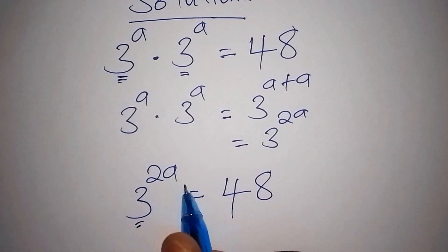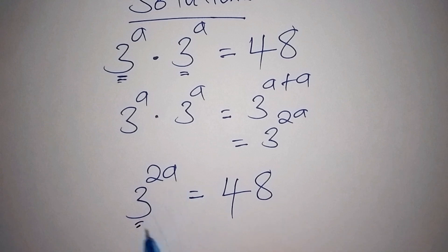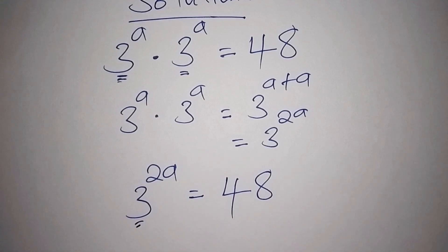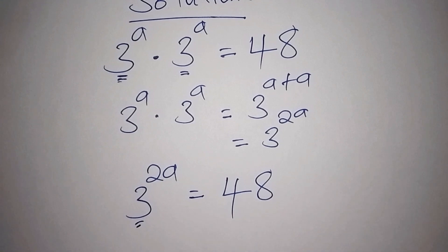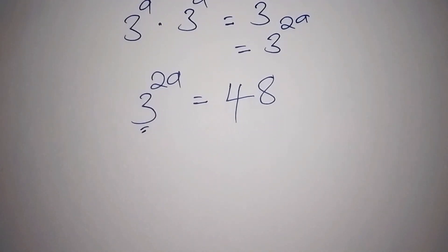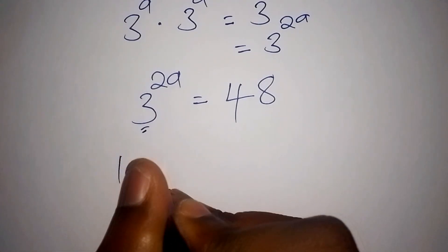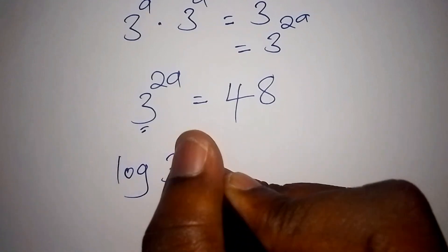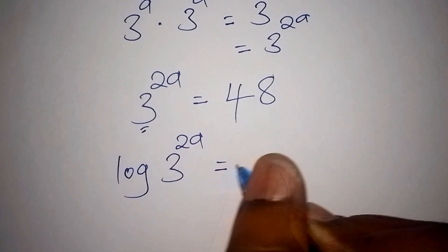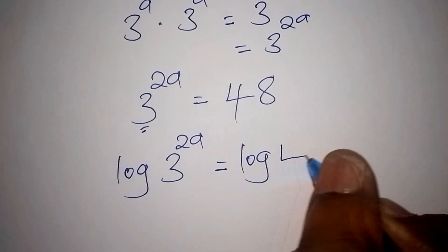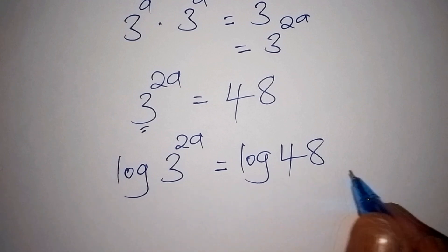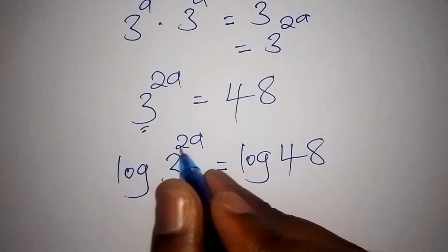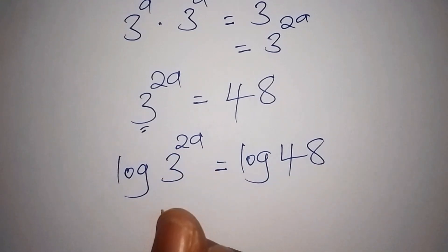We have a base and an index — the index here is 2a, and 48 is a whole number. To solve this, we introduce the logarithm on both sides. So we write: log of 3 to the power of 2a is equal to log of 48.